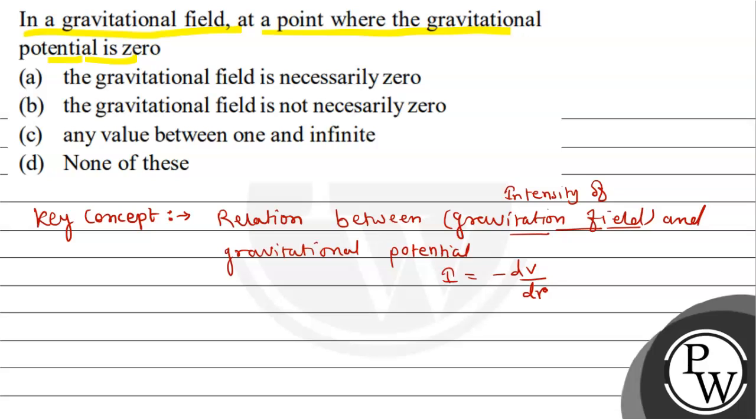Here we have to look at the solution as per condition. So, as per given condition, if v equals to 0, that is gravitational potential equals to 0.